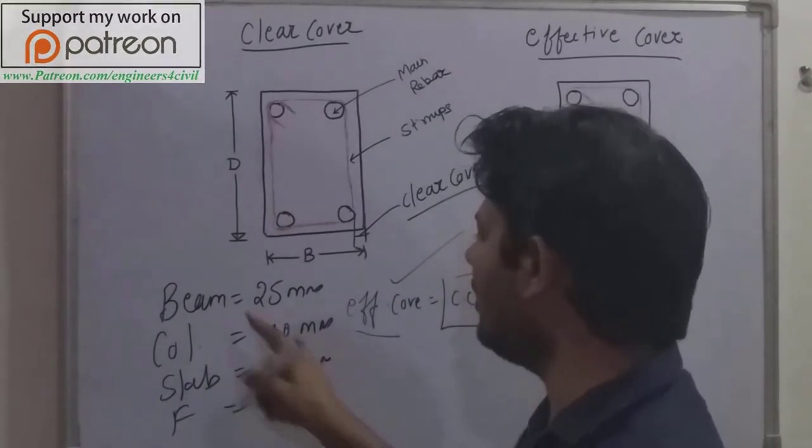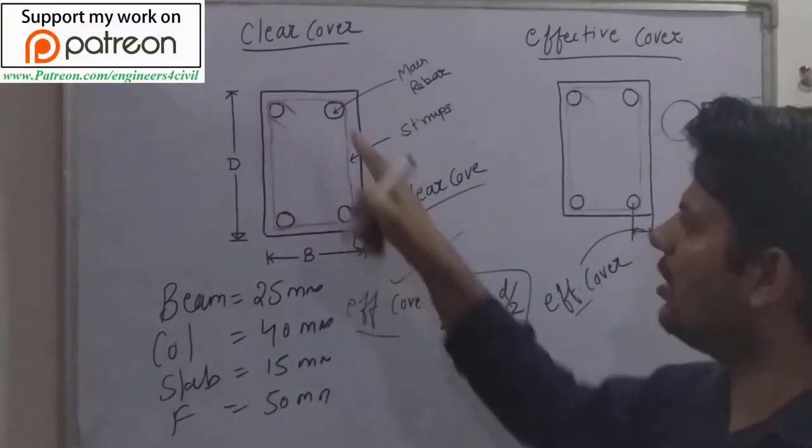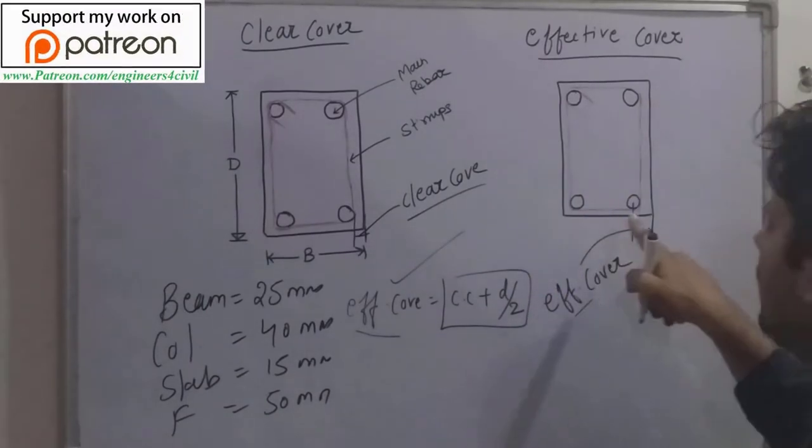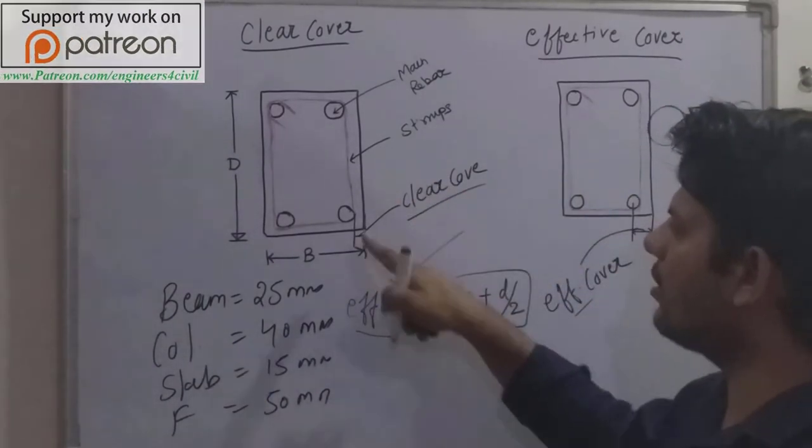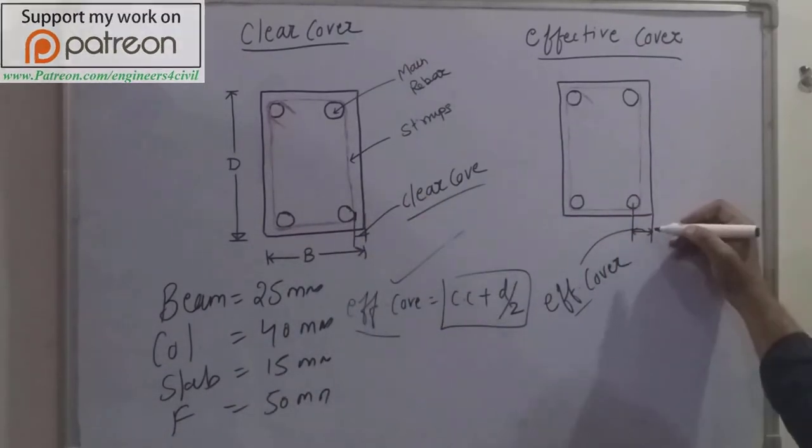So this is the least clear cover according to IS 456 we use. This is the difference between clear cover and effective cover. The difference is the distance. In clear cover we take distance from the outer edge of the bar, and in effective cover we take distance from the center of the bar.